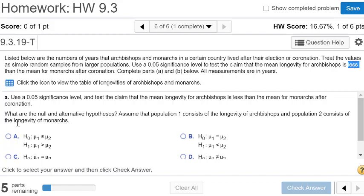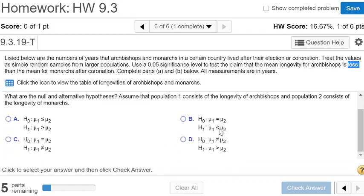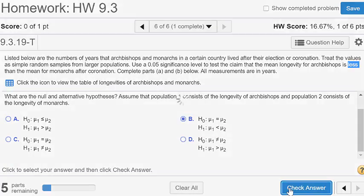So if we take a look at our choices here, what are the null and alternative hypothesis when we assume that population 1 are for the archbishops and population 2 are for the monarchs? It says archbishops, the longevity for archbishops is less. So it's going to be a less than symbol between mu1 and mu2. The only less than symbol I see here is in part B. So that should be the answer.